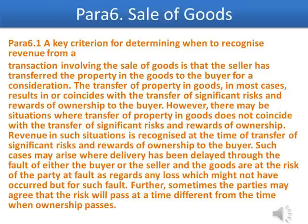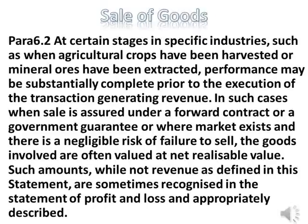Such cases may arise where delivery has been delayed through the fault of either the buyer or the seller and the goods are at the risk of the party at fault as regards any loss which might not have occurred but for such fault. Further, sometimes the parties may agree that the risk will pass at a time different from the time when ownership passes. Para 6.2: At certain stages in specific industries, such as when agricultural crops have been harvested or mineral ores have been extracted, performance may be substantially complete prior to the execution of the transaction generating revenue. In such cases when sale is assured under a forward contract or a government guarantee, or where a market exists and there is a negligible risk of failure to sell, the goods involved are often valued at net realizable value. Such amounts, while not revenue as defined in this statement, are sometimes recognized in the statement of profit and loss and appropriately described.